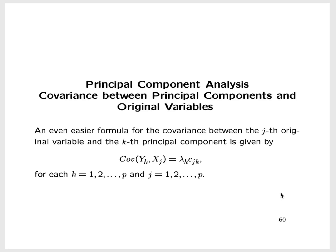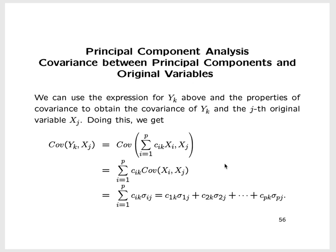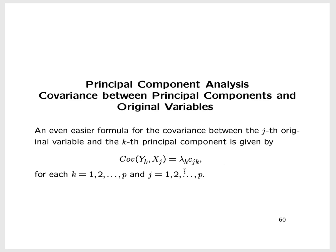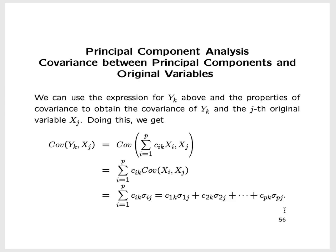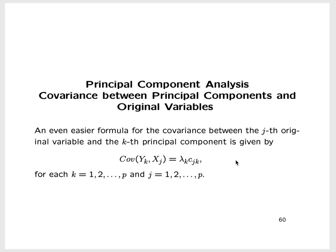There is an even easier formula for the covariance between the jth original variable and the kth principal component: instead of computing a sum of p products, we compute a single product. This is λ_k, the kth largest characteristic root of Σ, times c_jk, the jth entry in the vector C_k. You get the same value using either formula.